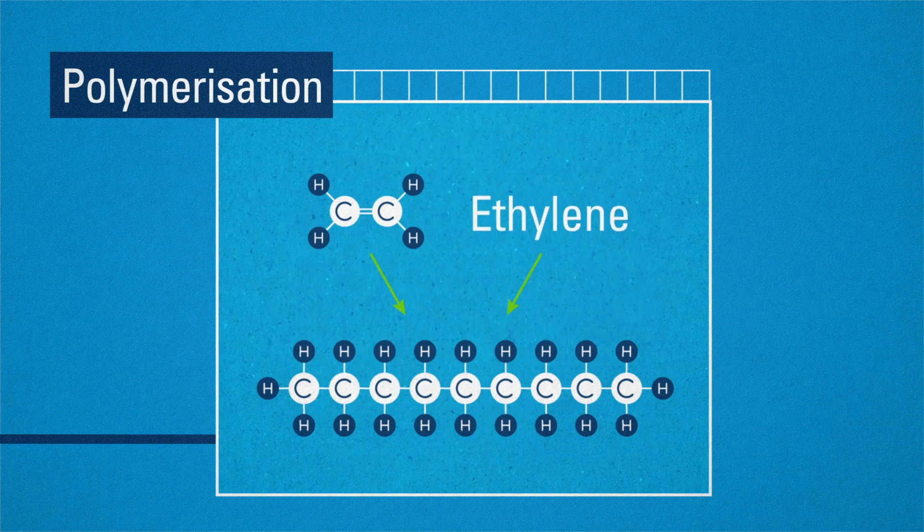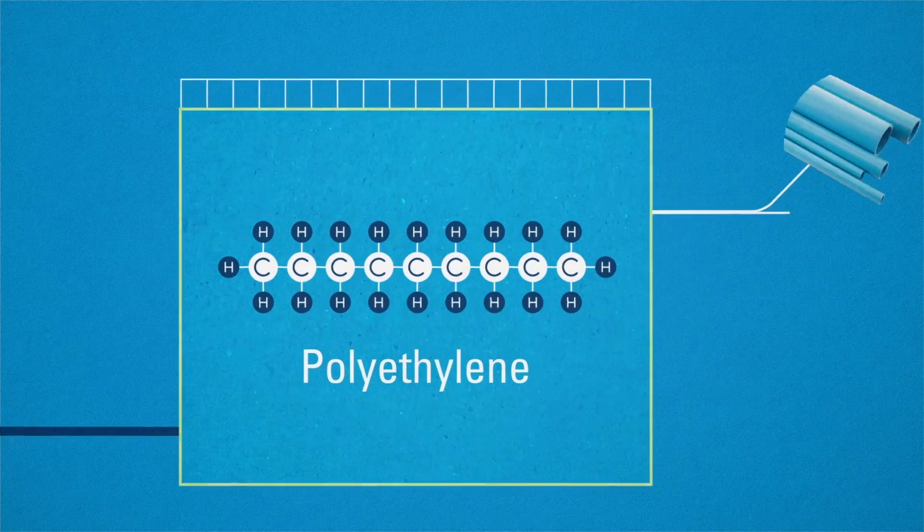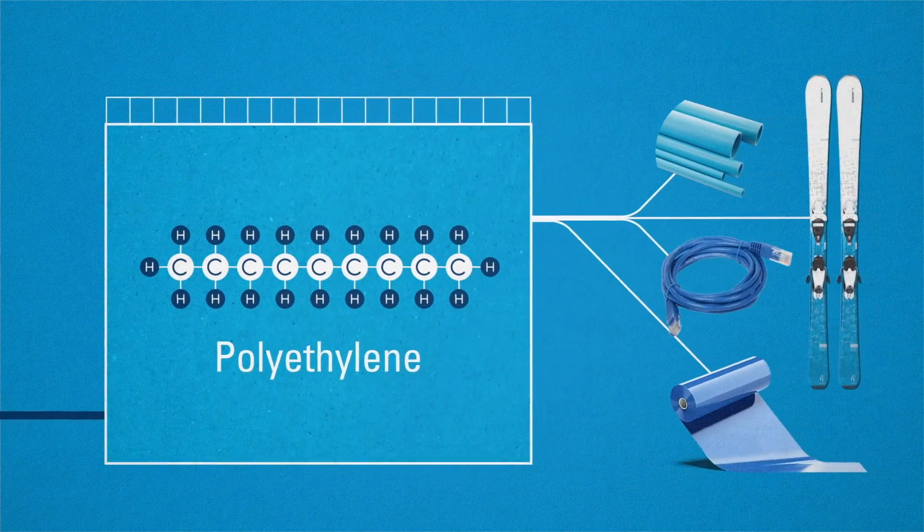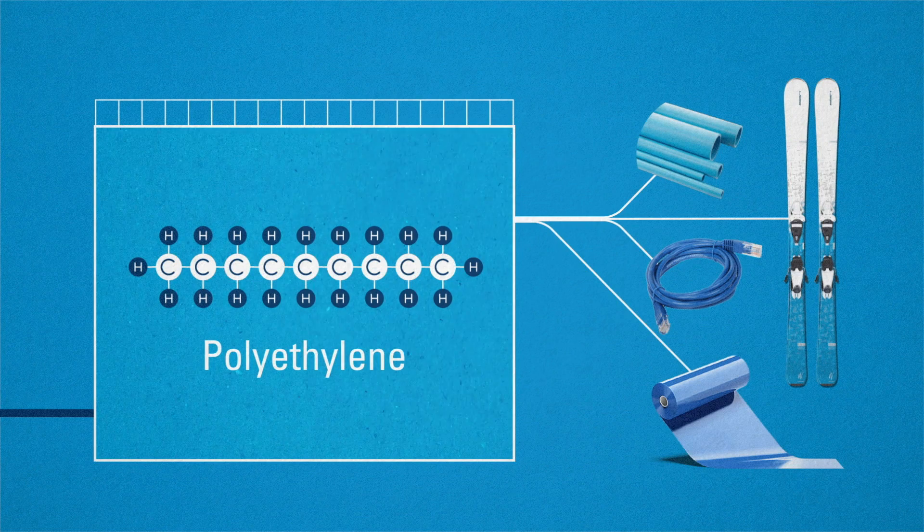From ethylene comes polyethylene. It is highly ductile and resistant. From gas and water pipe networks to insulation for data cables, this plastic is the most commonly used in the world.